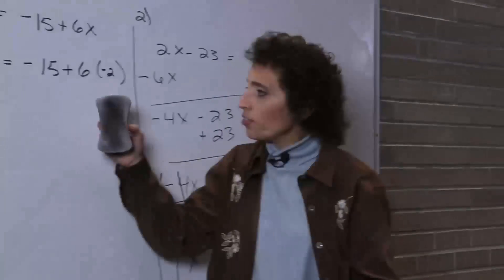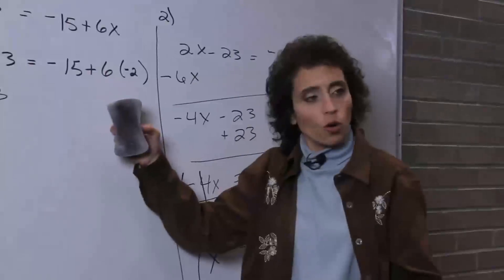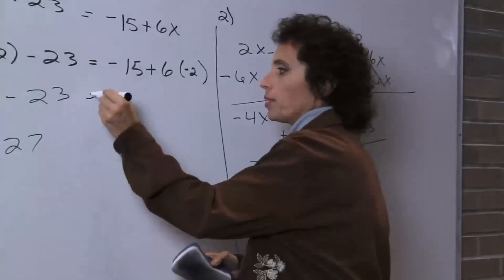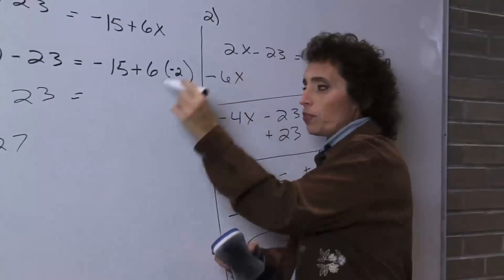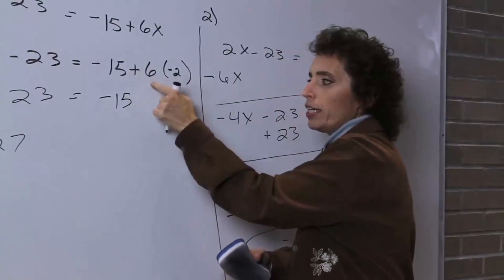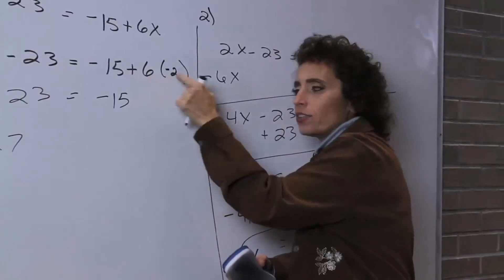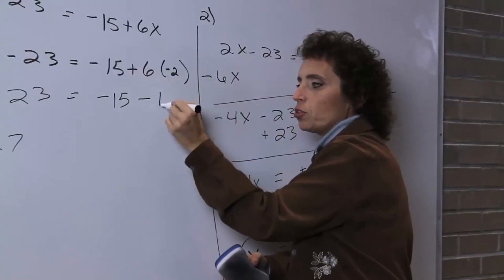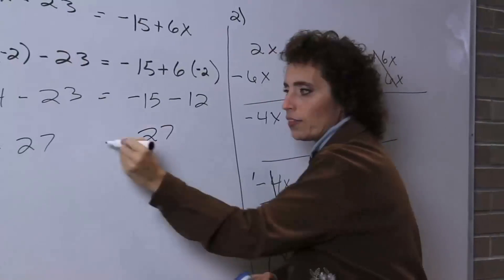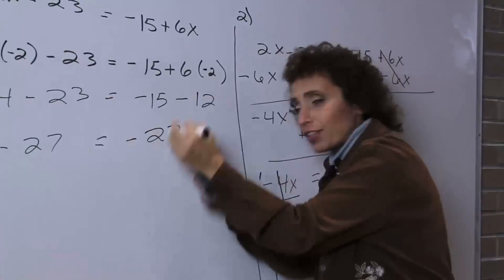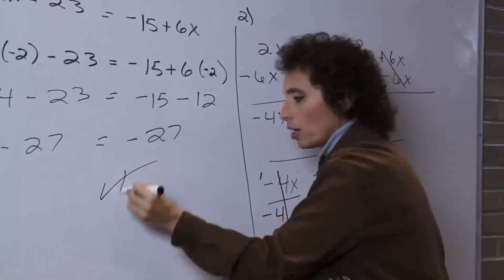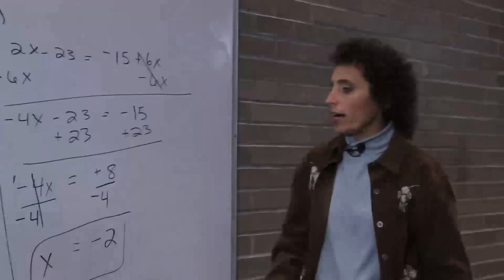If we did this right, the right side will also come out to negative 27. Order of operations — parentheses first. Negative 15, then we multiply: positive times a negative is a negative. 6 times 2 is 12, and negative 15 minus 12 — I owe you 15, I owe you 12, so I owe you 27. That is negative 27. So that is correct.